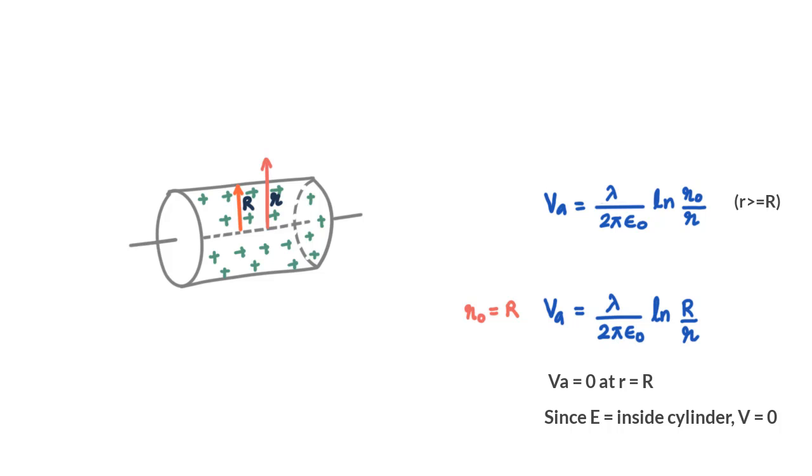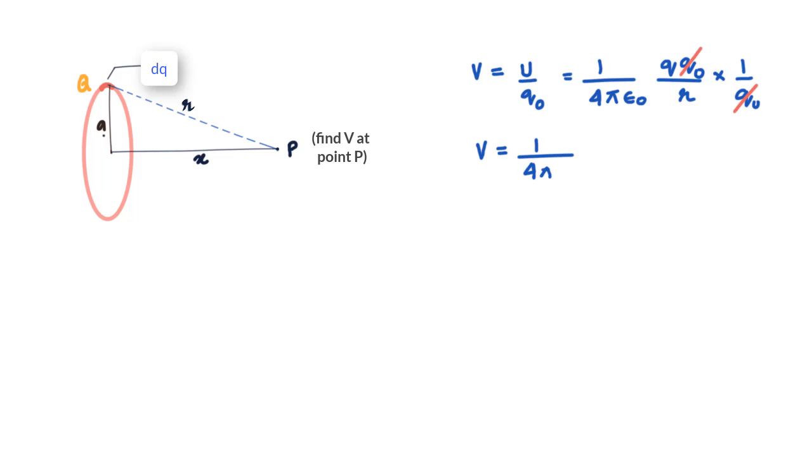So, let us now go ahead and find what is the potential at a distance X from the center of a thin ring that has charge Q distributed on it. So, here what we will do is divide up the ring into very small parts such that each part has a charge DQ and use the equation V is equal to U by Q naught that is 1 by 4 pi epsilon Q by R.